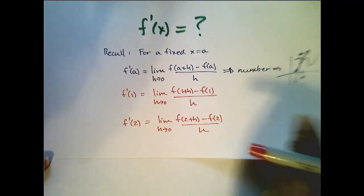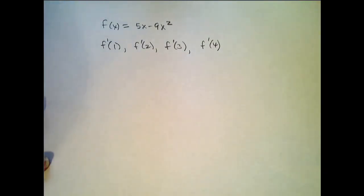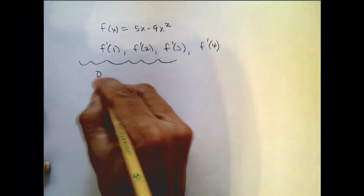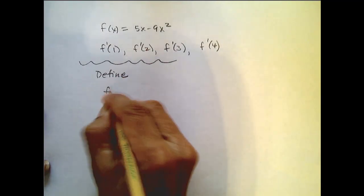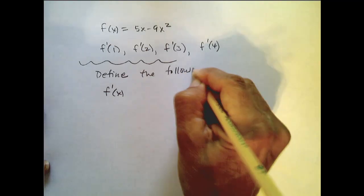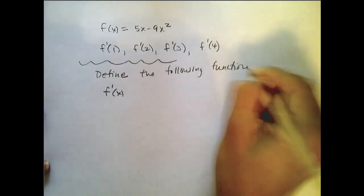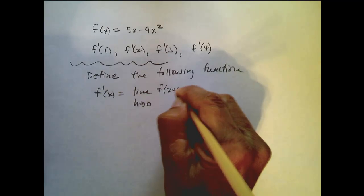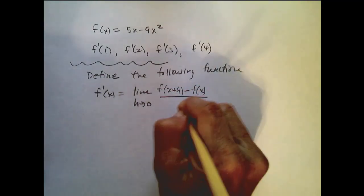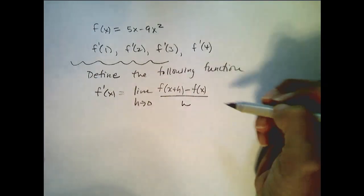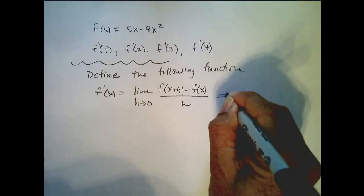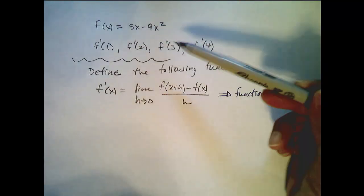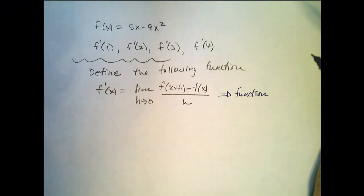Well what would be nice is if I only had to take that limit once. So let's not fix our x value being a, and let's define the following function as the limit as h goes to 0 of f of x plus h minus f of x all over h. Now instead of having a particular a value in there where this produces a number, this actually is going to produce a function. And once we have that function, we can then input 1, 2, 3, and 4 into this function after we've taken the limit just once.